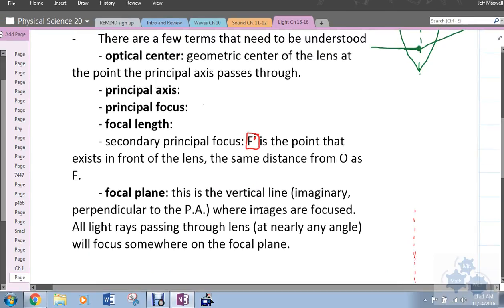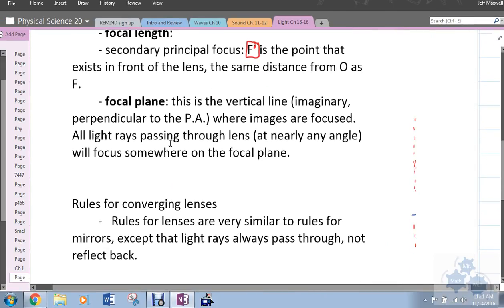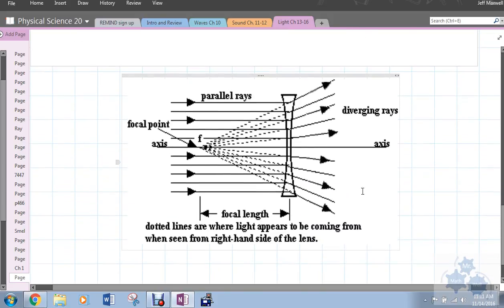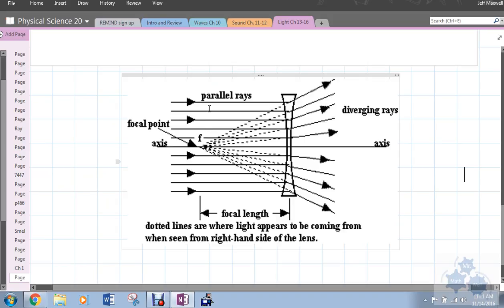The focal plane, this is the vertical line that's imaginary, and it's perpendicular to the principal axis, where all images are focused. Yeah, here's the focal plane right here passing through the focus. It's an up and down perpendicular plane to the principal axis.